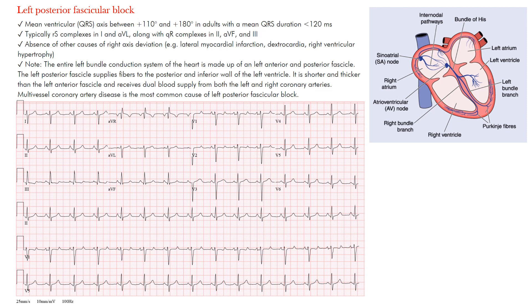Left posterior fascicular block is an anatomical or functional dysfunction in the left posterior fascicle of the left bundle branch. This results in left ventricular depolarization really relying on the left anterior fascicle — almost the opposite of what we saw in left anterior fascicular block. Let's review the conduction system.